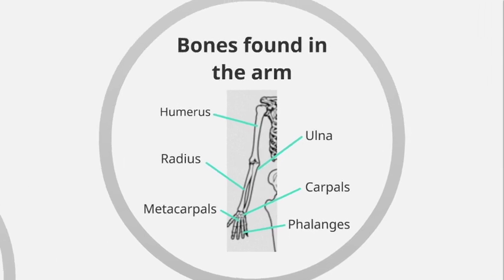Moving on to the next section — there are six different bones found in the arm. First we have the humerus. An easy way to remember it is that many people call it the funny bone, because when you bang it, it really hurts. The anatomical name is the humerus. We then have the radius and the ulna, which make up the lower arm. To tell them apart: the L in ulna stands for little, so the bone that runs alongside the little finger is the ulna. The bone across from it is the radius.